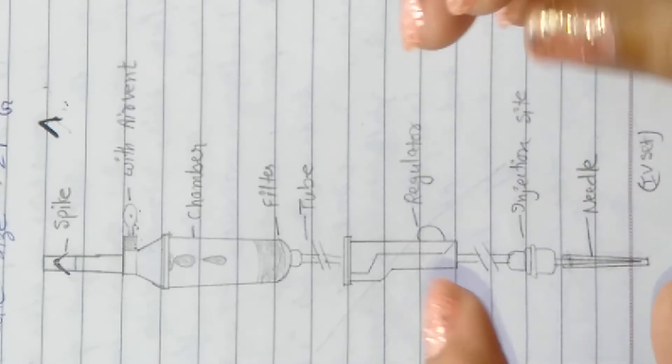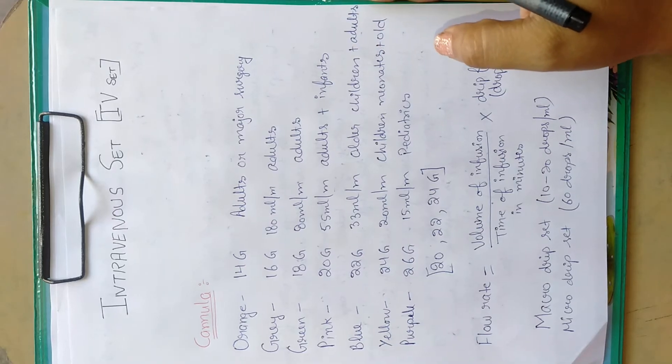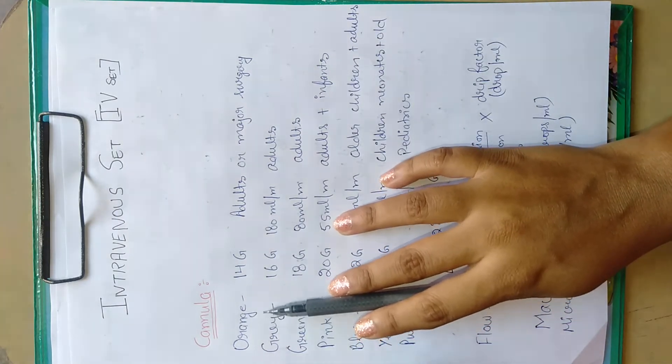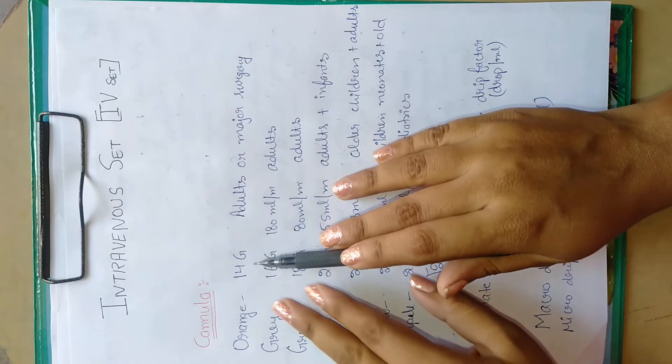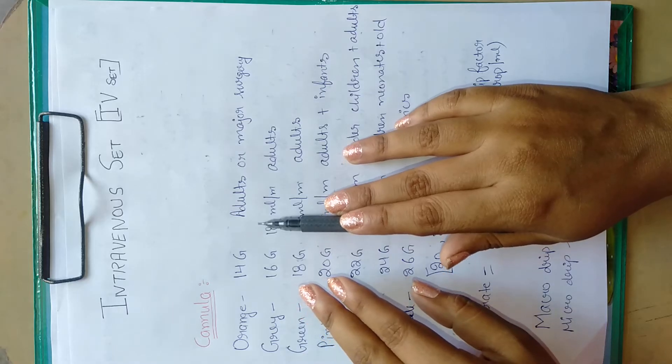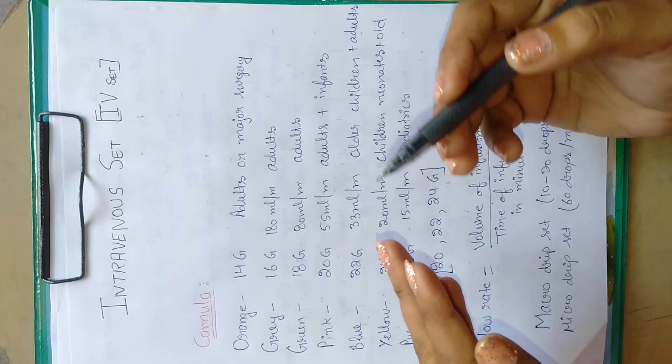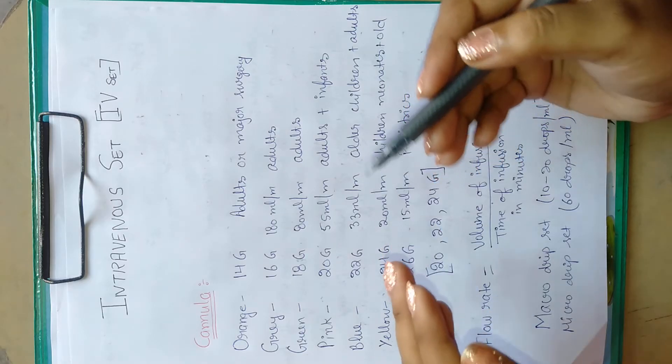There are various types of cannulas that are used for different age groups. First, there is the orange colored cannula of 14 gauge. It is used for adults, or if there is any major surgery or blood transfusion, then this cannula is used.